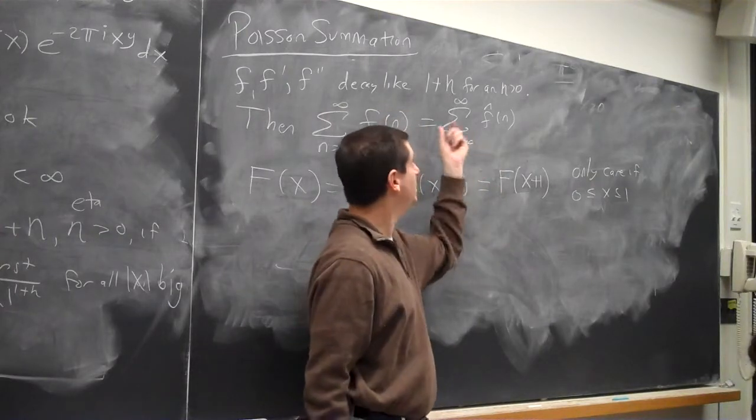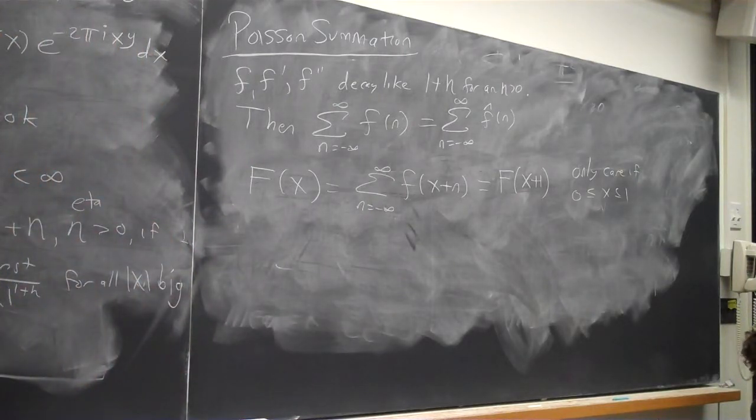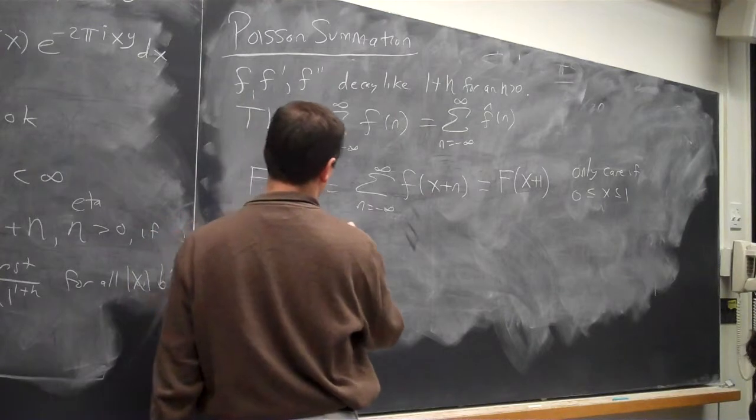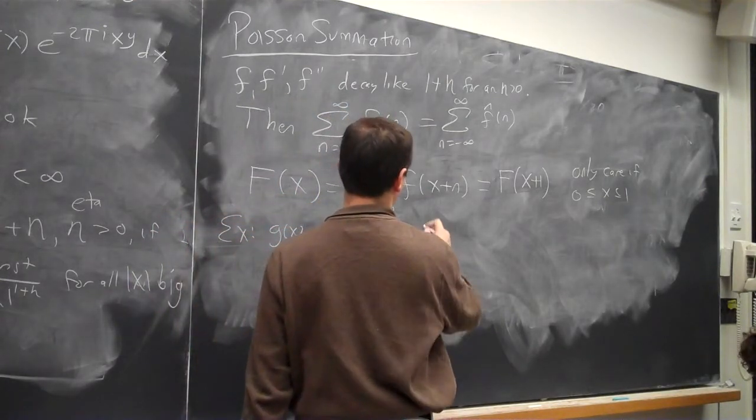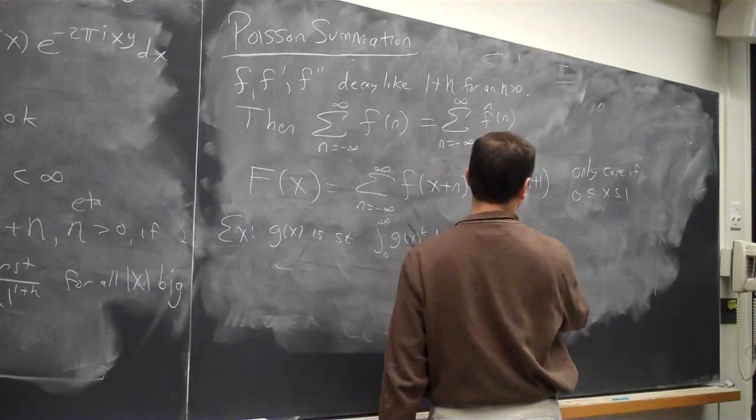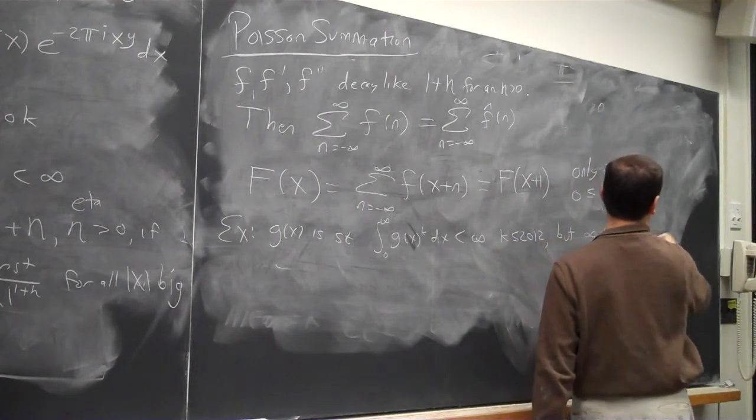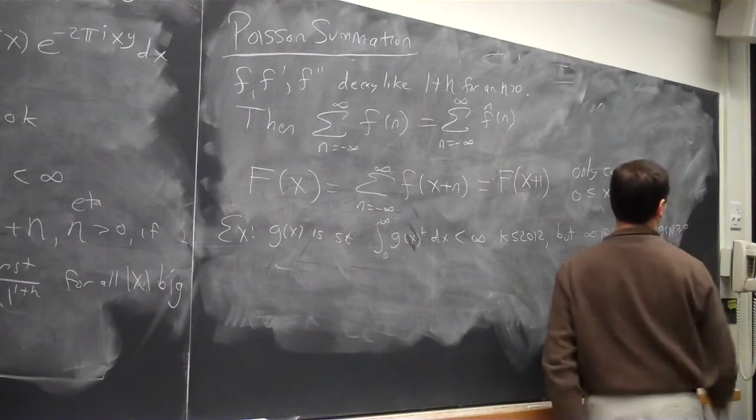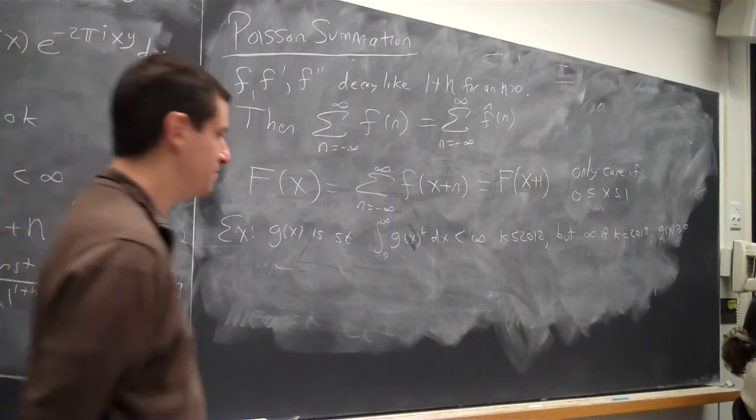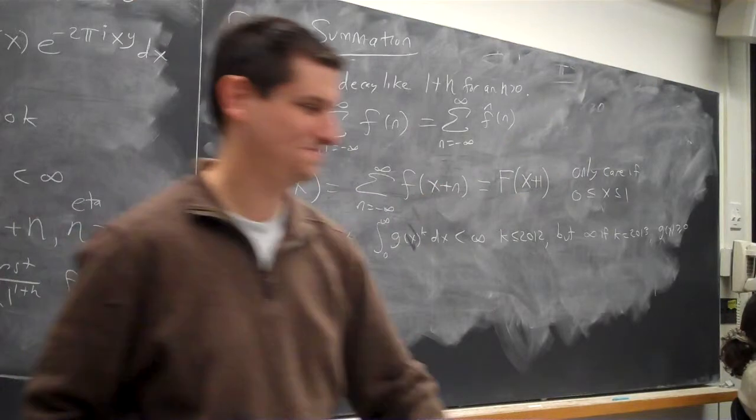Now we're in the realm of Fourier series. I have a periodic function. It would be really nice if this function had additional properties such as continuity or even more generally existence. So the question is, why do I need to impose these decay conditions? I need to impose these decay conditions so that f exists. So imagine I've talked to some of you about this example. Let's say g of x is such that the integral of g of x to the k dx from zero to infinity is less than infinity if k is less than equal to 2012, but infinity if k equals 2013. And we'll assume g of x is greater than or equal to zero. Does a function like this exist?